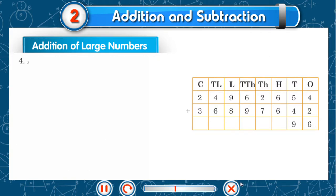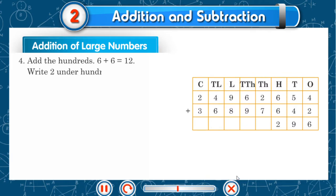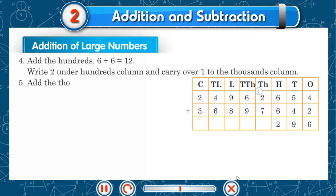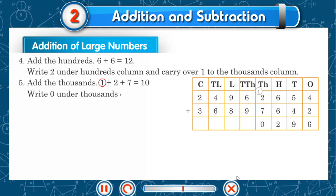Add the hundreds — 6 plus 6 is 12. Write 2 under the hundreds column and carry over 1 to the thousands column. Add the thousands — 1 plus 2 plus 7 equals 10. Write 0 under the thousands column and carry over 1 to the ten-thousands column.